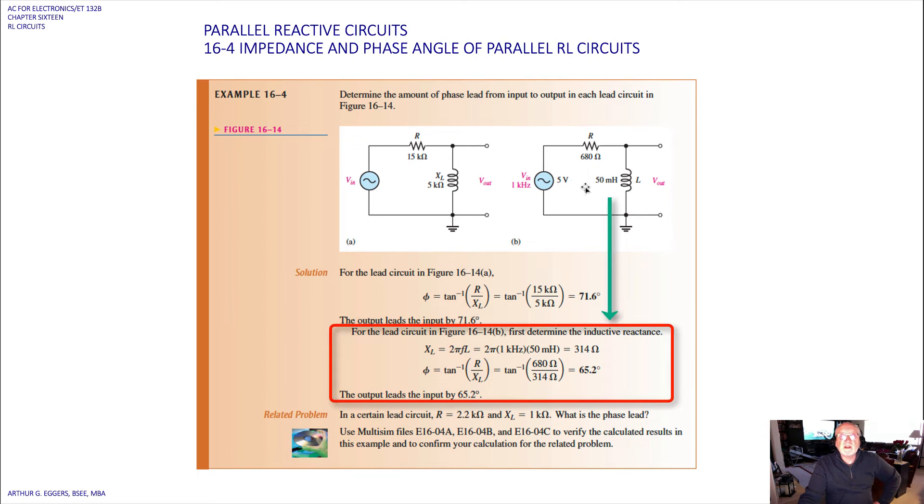For the lead circuit, then, in B, now we've got to calculate our reactance here because we're given our value in Henry. So 680 ohms, 50 millihenries of inductance. So, the first thing to do, then, is to calculate for our inductive reactance.